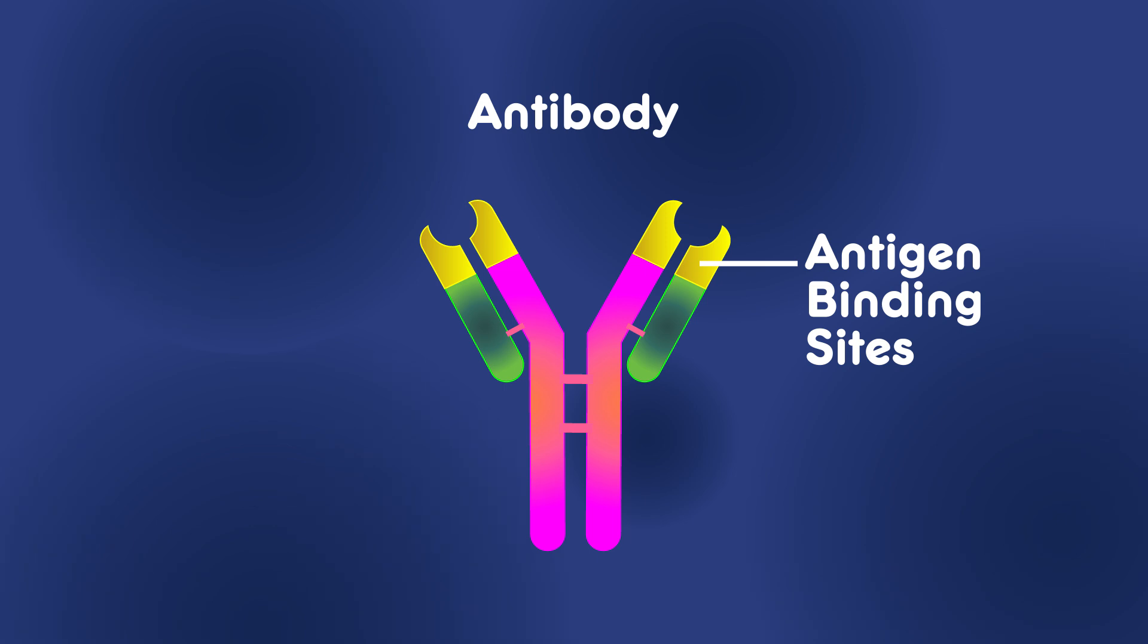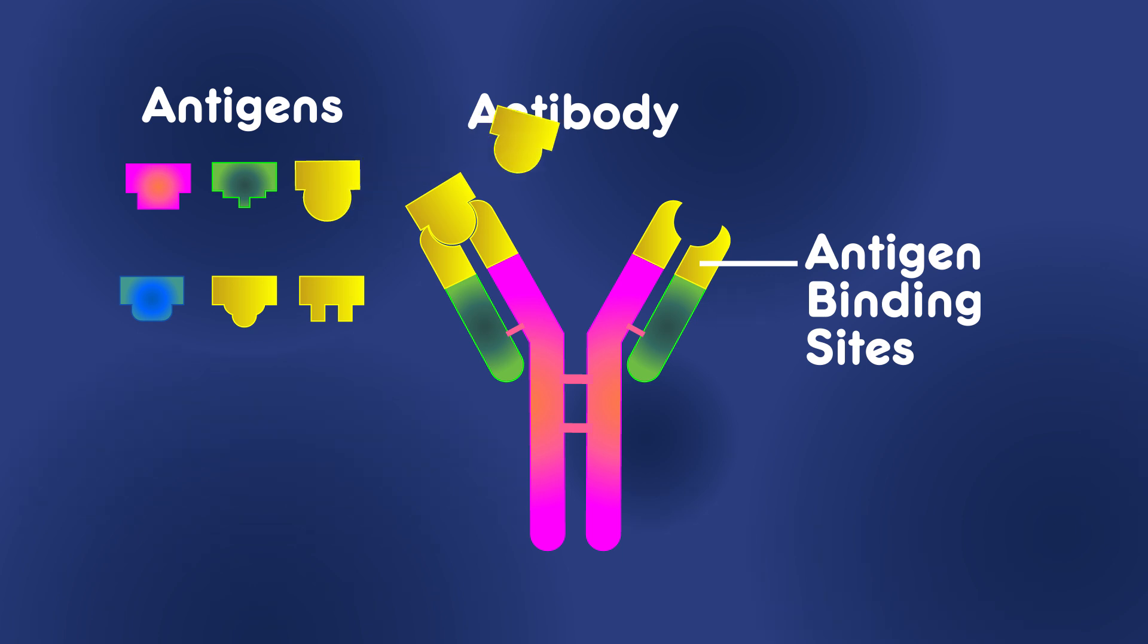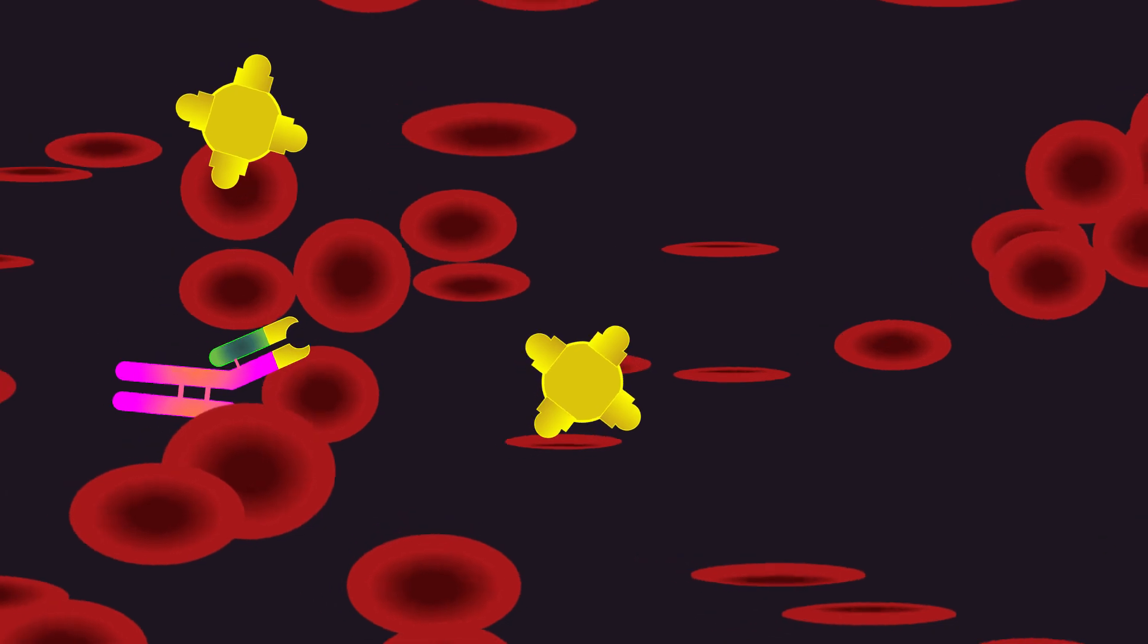Similar to the lock and key mechanism in enzymes, the shape of the antigen binding site is specific to the antigen it's targeting. If part of the antigen fits into the antigen binding site, the antibody recognizes the foreign antigen and binds it in. This stops the antigen from causing more damage elsewhere.